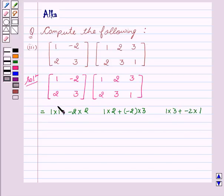And in the second row we get 2 into 1 plus 3 into 2. Then 2 into 2 plus 3 into 3. Then 2 into 3 plus 3 into 1.